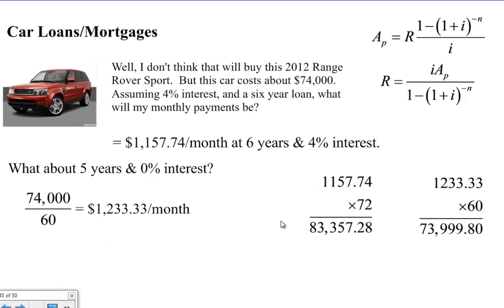Well, if we take our first one, our first payments, and multiply it by 72, which is how many payments we would have to make, we actually end up paying $83,000. If we take our second payments and multiply it by 60, we end up with $74,000. And so what happens with that is you end up saving almost $10,000 in interest by taking the 0% financing.